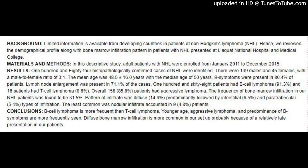Conclusions: B-cell lymphoma is more frequent than T-cell lymphoma. Younger age, aggressive lymphoma, and predominance of B-symptoms are more frequently seen. Diffuse bone marrow infiltration is more common in our setup, probably because of a relatively late presentation in our patients. Keywords: Non-Hodgkin's Lymphoma, Pakistan, WHO subtypes.